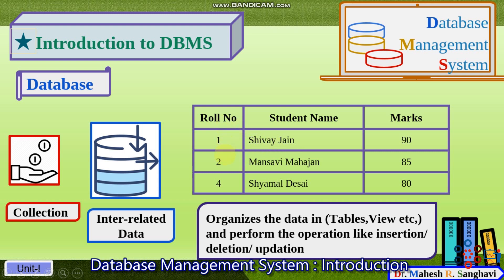You can see here: roll number column contains only roll numbers, student name column contains only student names, and marks column contains only marks. So the record of Shivai Jain — roll number 1, marks 90 — is interrelated with Manasvi Mahajan's record. This is known as a collection of interrelated records. Data may be organized in tables, views, objects, or a combination of both.